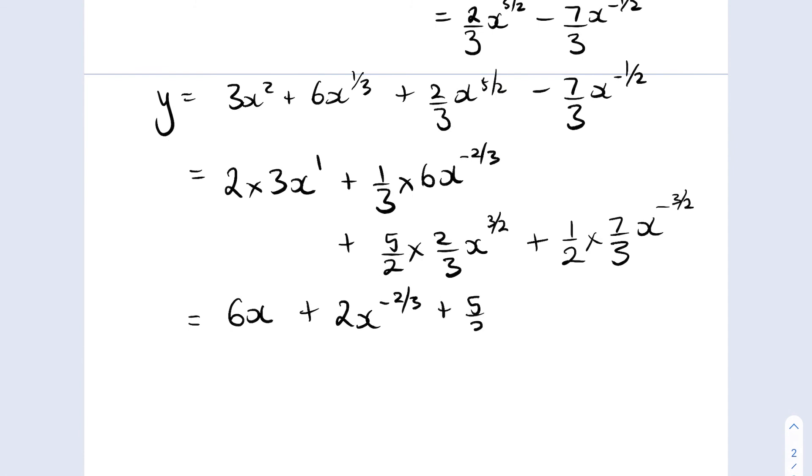And then 1 times 7 on the top, 2 times 3 on the bottom, x to the minus 3 over 2. And that is my expression for dy by dx.